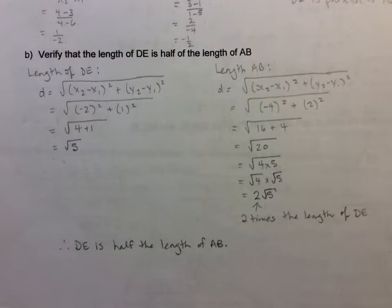For part B we needed to verify that the length of DE is half of the length of AB. So I calculated the length of DE and got it to be equal to the square root of 5, and I didn't bother taking that to a decimal amount because I'm going to compare exact values. The length of AB ended up being the square root of 20 when I used the formula.